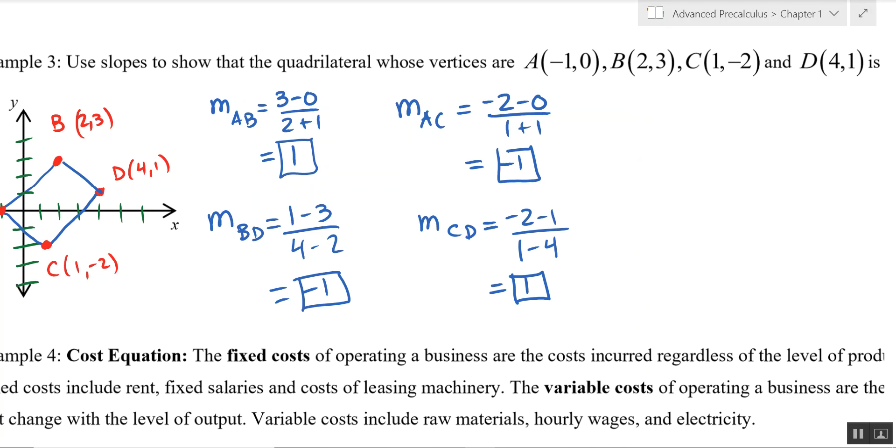Alright, so it looks something like this. We get 4 slopes: 1, negative 1, negative 1, and 1 respectively.